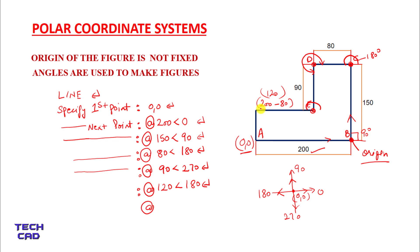Again add the at-sign. Now you are here at this point and you are coming back to your origin. Again add the at-sign, and the length of this line is 150 minus 90, so it is 60. Less-than. What is the angle now? This complete angle — that is 270. Then enter.